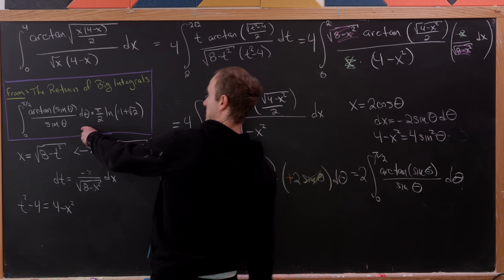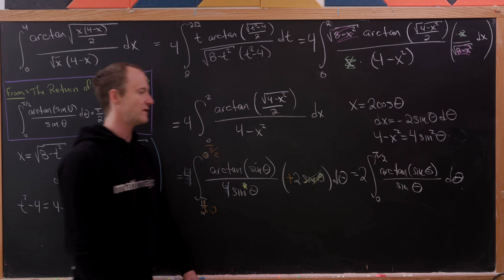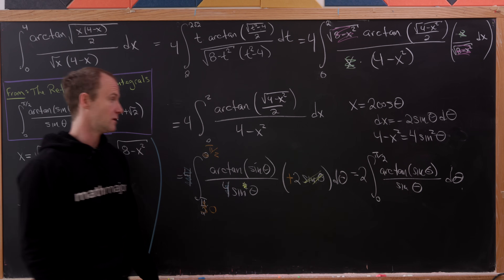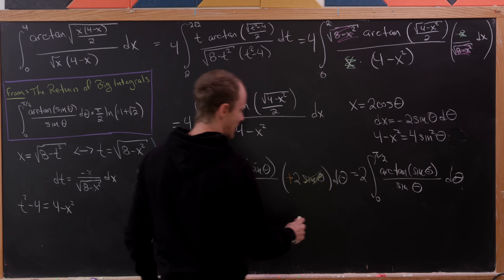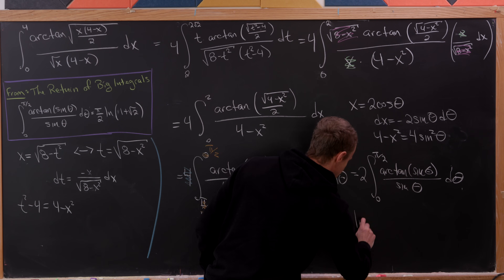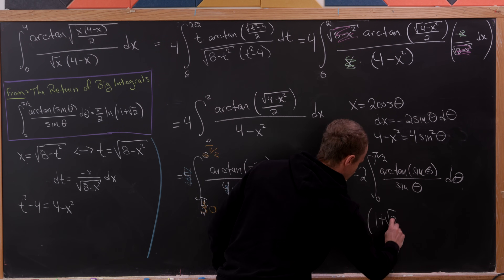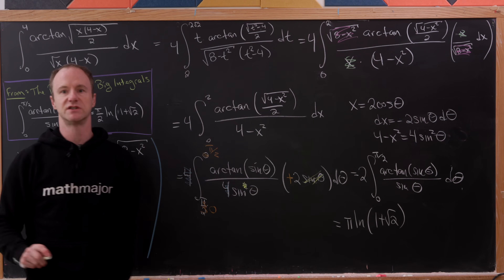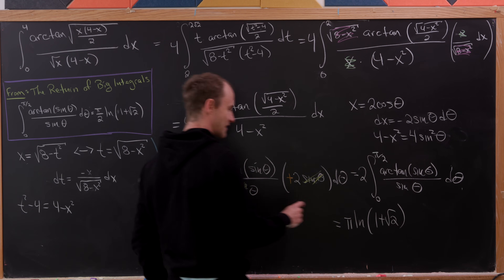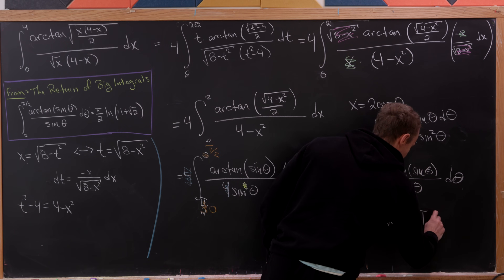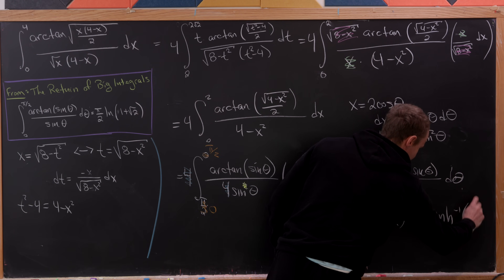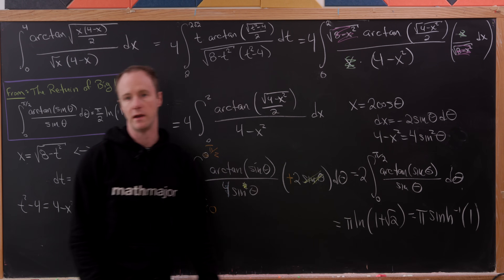This integral is exactly the tool from our previous video. The twos cancel, and we arrive at the final answer: π times the natural log of (1 + √2), which equals π times the inverse hyperbolic sine of one.